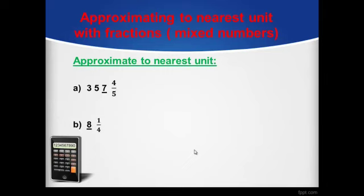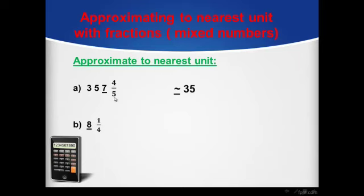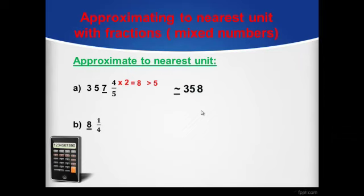Let's apply on our exercises. First exercise: 357 and 4 over 5. First, we will keep numbers before the units digit — which is 7 here — the same, so we keep 35 same as it is. Then we will look at our fraction, which is 4 over 5. Multiply the numerator by 2: it equals 8. Compare it with the denominator, which is 5 — 8 is greater than 5. So our fraction will give 1 to our units digit, and 7 will become 8, and the fraction will be cancelled out.